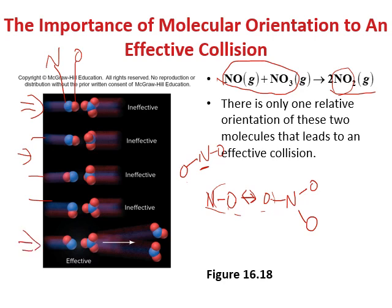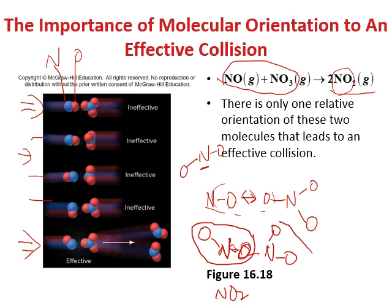In the last diagram, the oxygen directly collides with the nitrogen — they form a bond — giving two NO2 products. So only the last orientation gives effective collision along the right direction. This shows that only certain orientations give the desired product after collision.